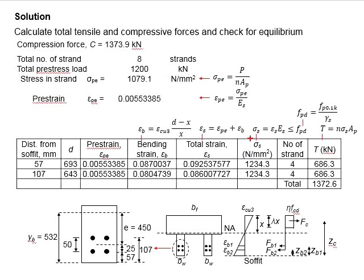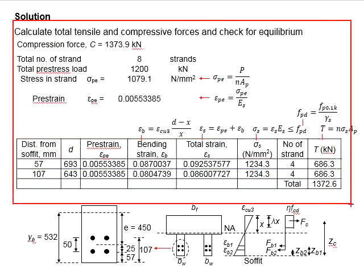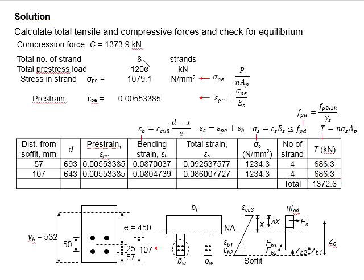When the strain σ_s differs by layer, that means not all the tendons have yielded, which will result in slightly different tensile forces in the tendon. Now let us look into the calculation steps to determine the total tensile force in the tendon. First, you need to determine the pre-strain developed in the tendon, which is due to the pre-stressing load.